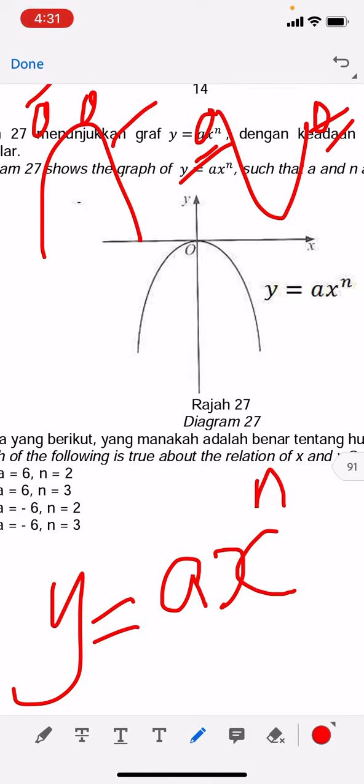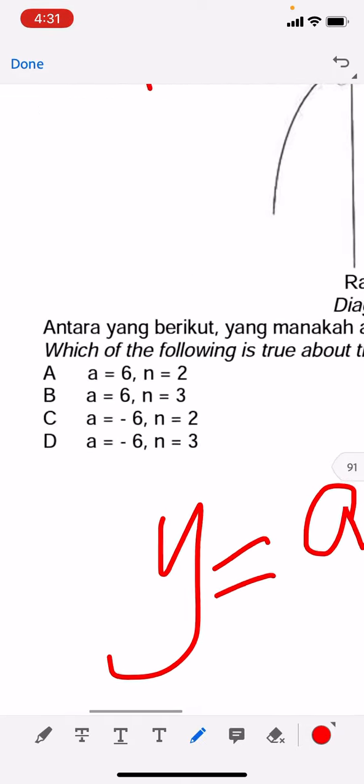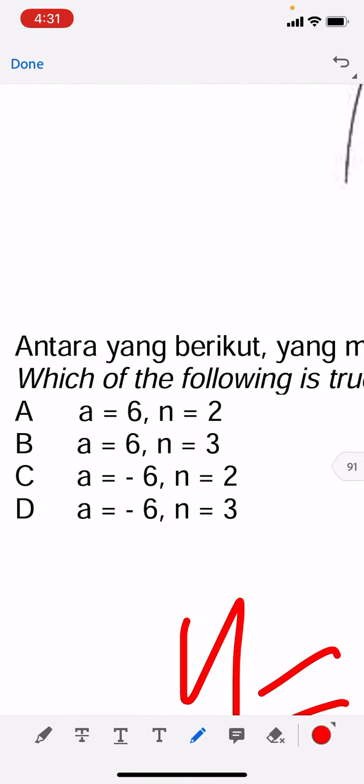The power should be two, so where is the power two? It's either option A or C.